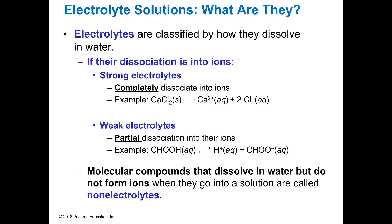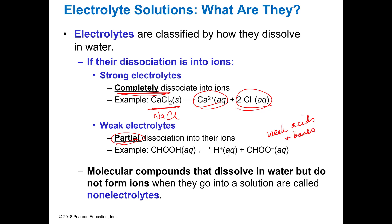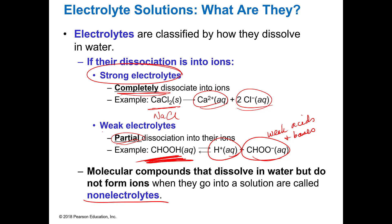Electrolytes can dissociate into ions. Strong electrolytes completely dissociate into ions — such as sodium chloride or calcium chloride — where they completely turn into their component ions. Weak electrolytes partially dissociate; you'll typically see weak acids and bases here. They do make some ions, but the majority stays in the molecular or covalent form. Molecular forms that dissolve in water but do not form any ions are called non-electrolytes. So you have strong electrolytes that completely dissociate, weak electrolytes that partially dissociate, and non-electrolytes that do not dissociate at all.